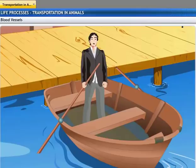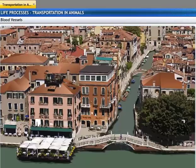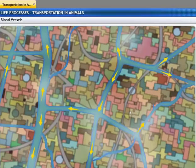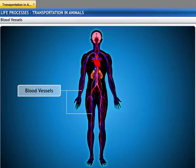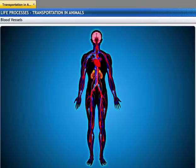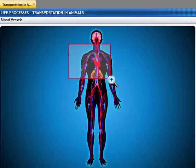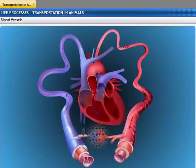The city of Venice has an extensive network of waterways that allow boats to move around freely. Similarly, blood is transported from one part of the body to another through an intricate network of tubes called blood vessels. Blood needs to be pumped through the blood vessels for it to reach each and every tissue in the body. This function of pumping is carried out by the heart.